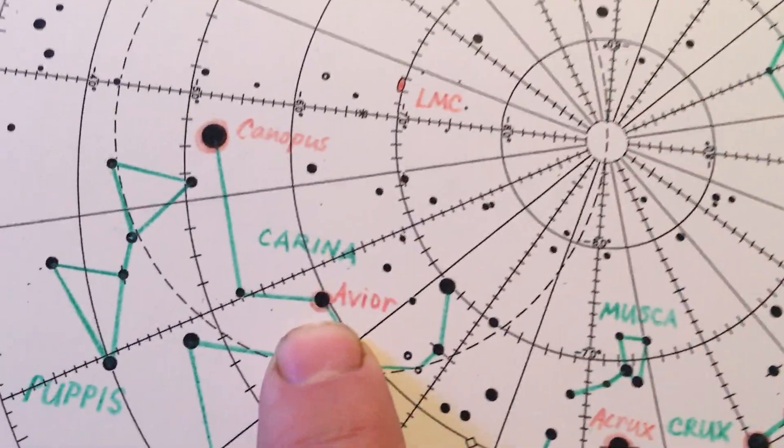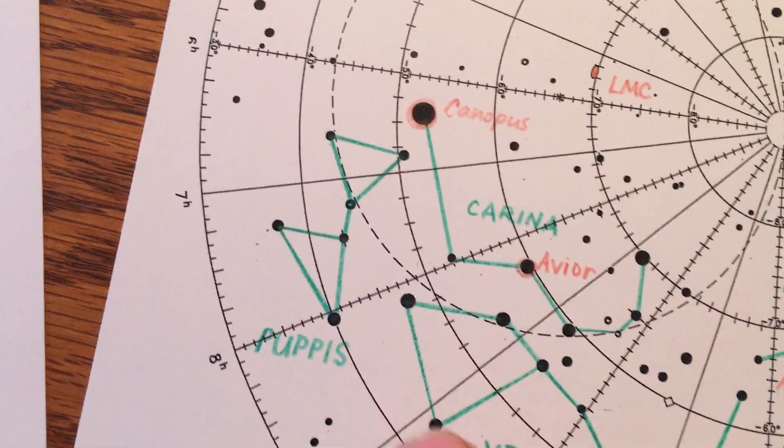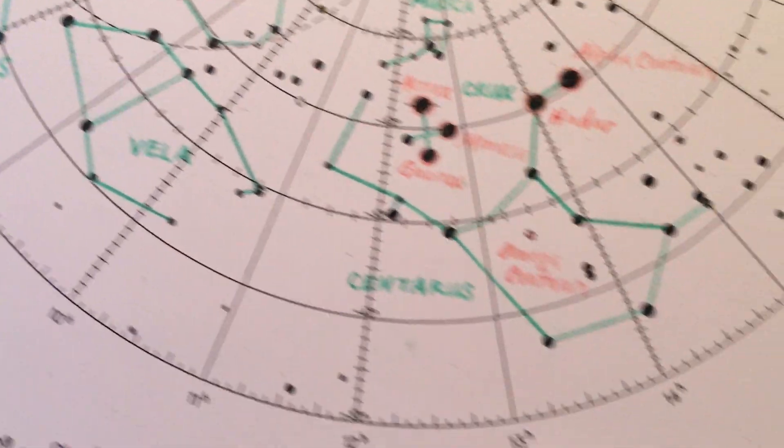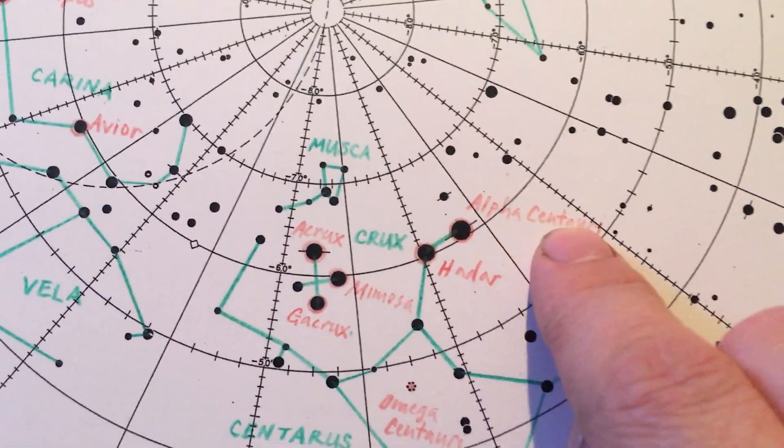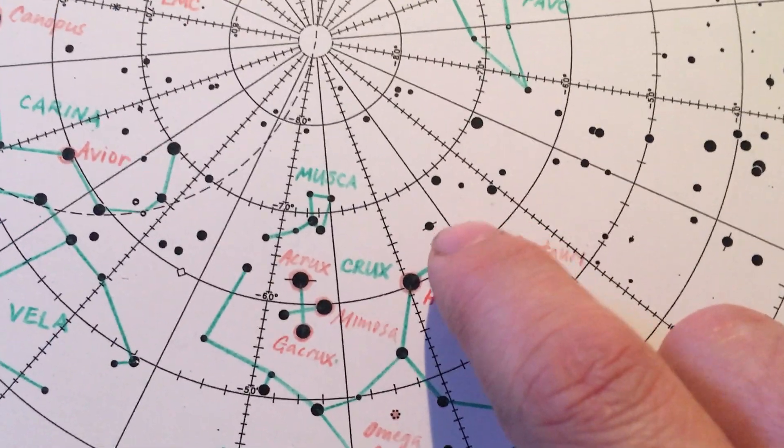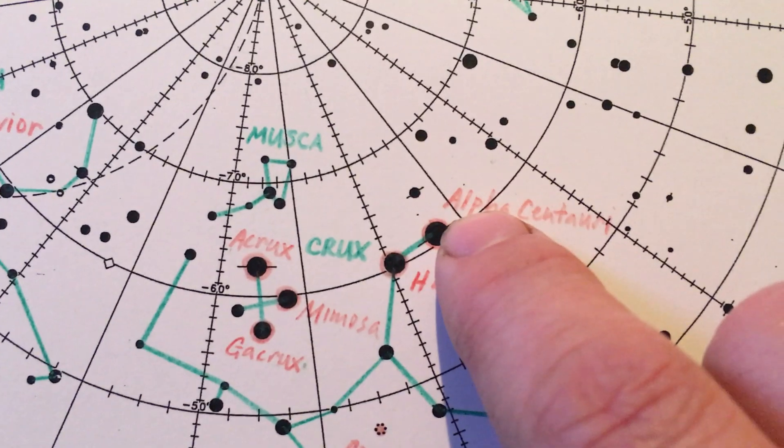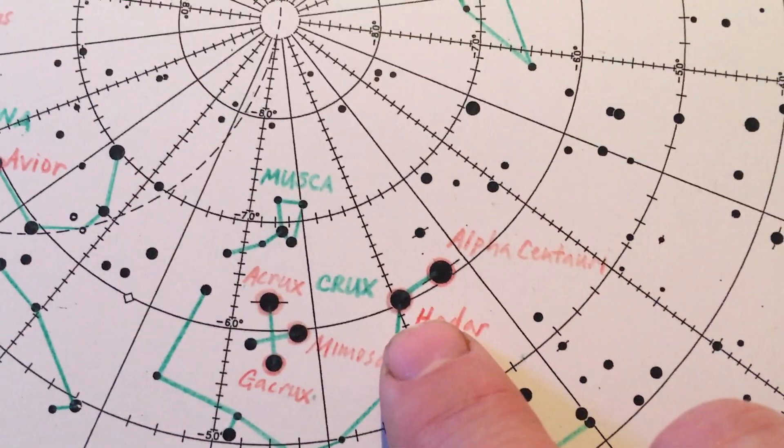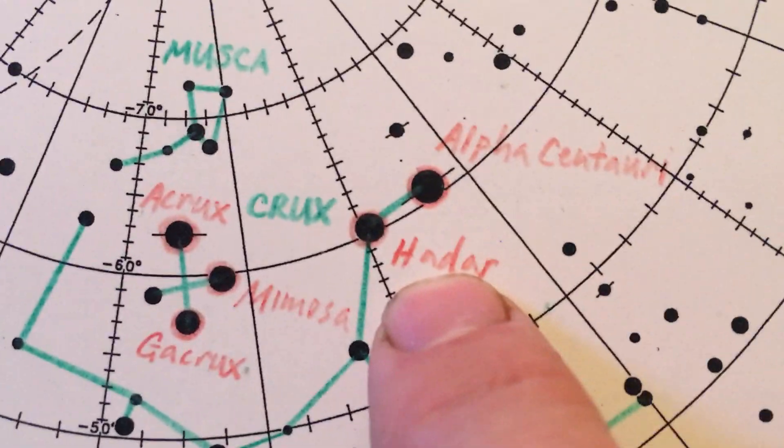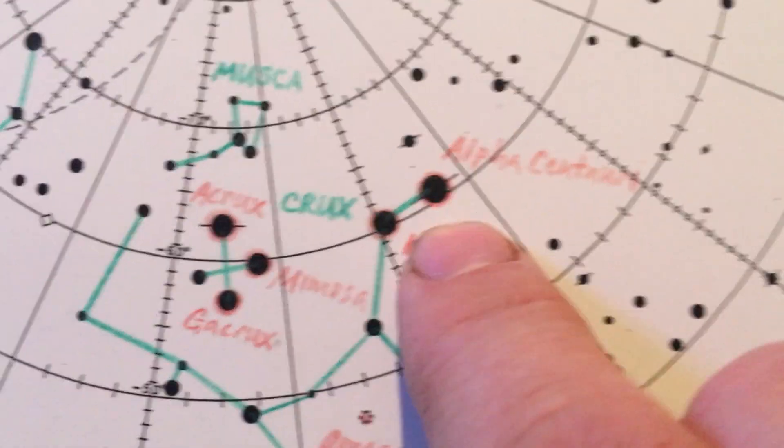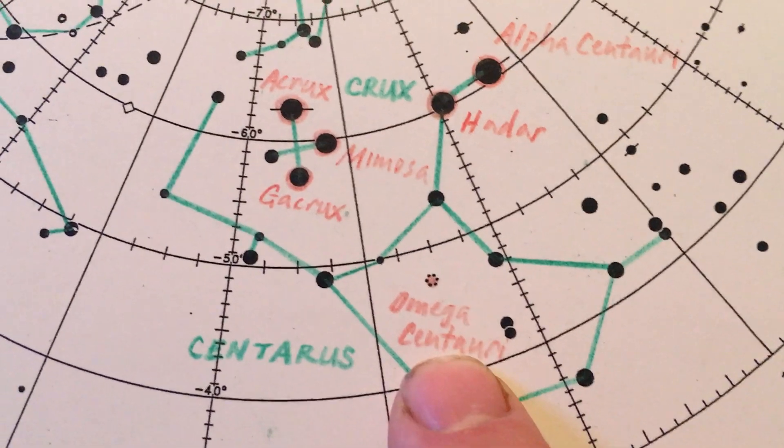So then Vela, the sail, and Puppis, the poop deck, don't have any bright stars. Okay. Over here to Centaurus, we've got the Alpha star, Alpha Centauri. That would be Alpha Centauri A, Alpha Centauri B, and Proxima Centauri, all contained in that one bright dot, the next closest star system to us. Here is Beta Centauri. I messed that up earlier. This one is called Hadar. Silly way I remember that. I think Hadar is going to hate. That's how I remember Hadar. Then right here is that beautiful naked eye star cluster called Omega Centauri.